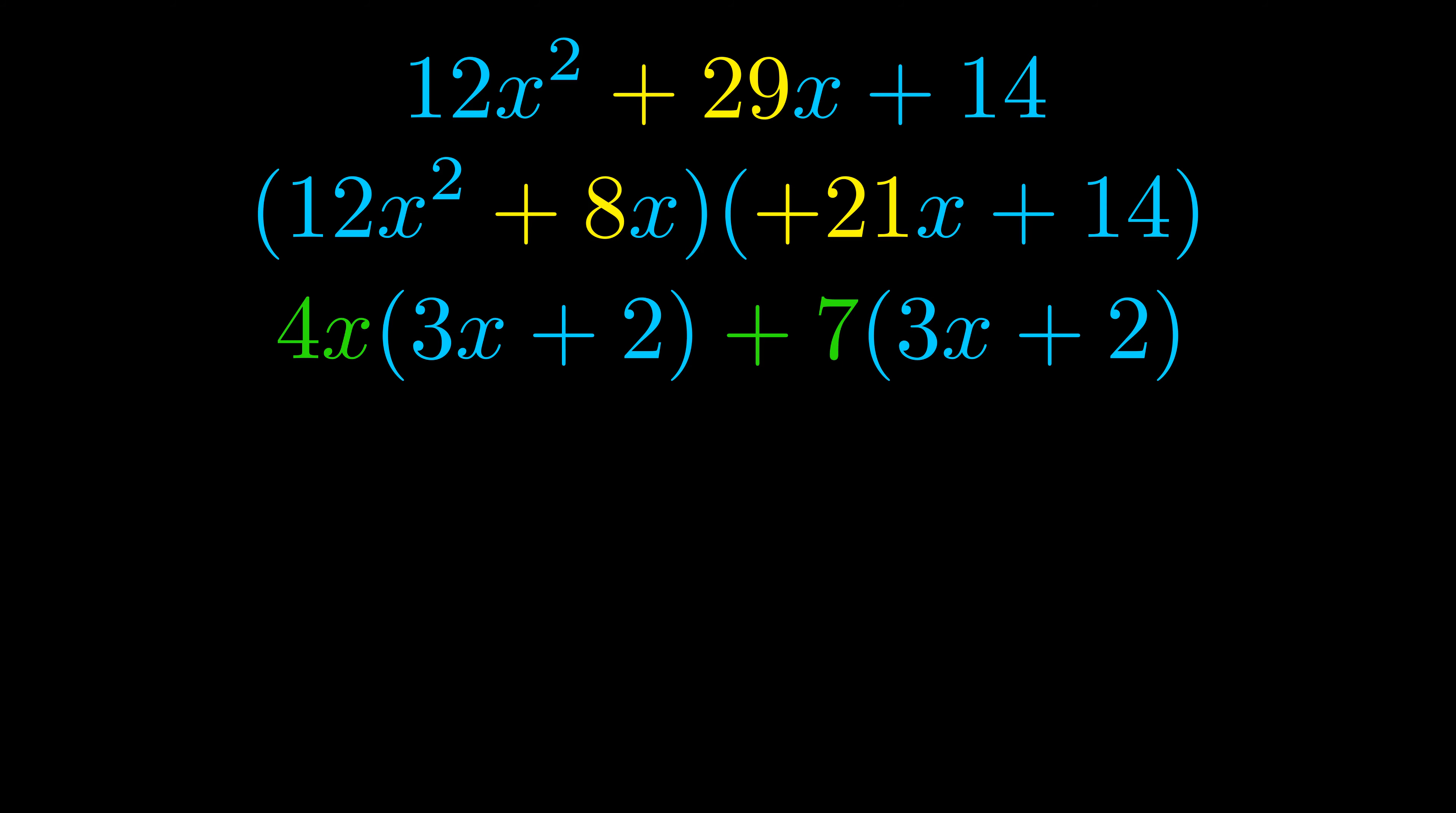Notice also how what remains inside of the parentheses is the same in both cases. The blue values are the same. Those blue values will become one of our factors and we will combine the two green values the GCFs that we pulled out to get the other one. And that is our fully factored equation.